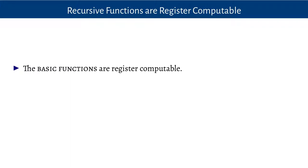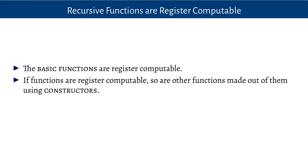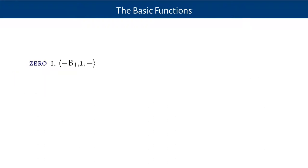Let's show how we can show that the recursive functions are computable by a register machine. This is the easy direction of the proof. The recursive functions are built up inductively. So, to show that they're register machine computable, we first show that the basic functions are computable by a register machine, and then we show that if we can compute functions by means of a register machine, then so are the other functions that can be made out of them using the constructors. Once we've done all of that, that shows that every recursive function can be computed by a register machine.